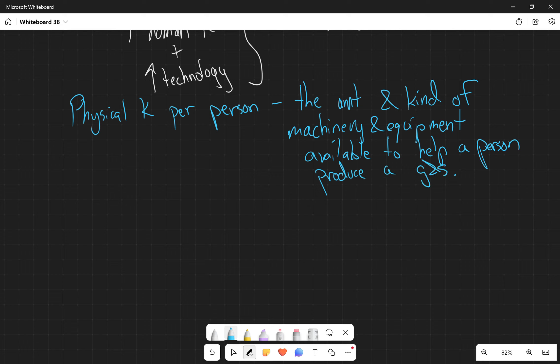So physical capital per person, the way that we increase that is just by buying more stuff, making sure that it's useful stuff. Buying computers, buying software, buying tables and ovens and mixers and so on and so forth.